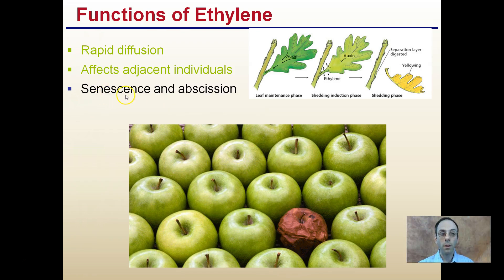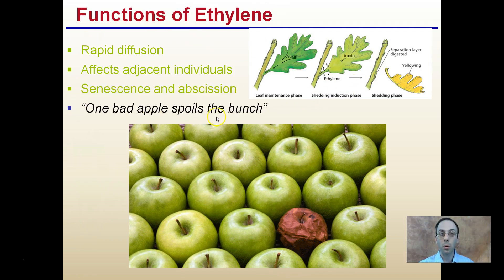Going back to senescence and abscission: senescence is where the leaves are being broken down, and abscission is where they're actually falling off the plant. Ethylene is involved in that process. And 'one bad apple spoils the bunch' — that's because of ethylene. One bad apple is going to ripen all the other apples.